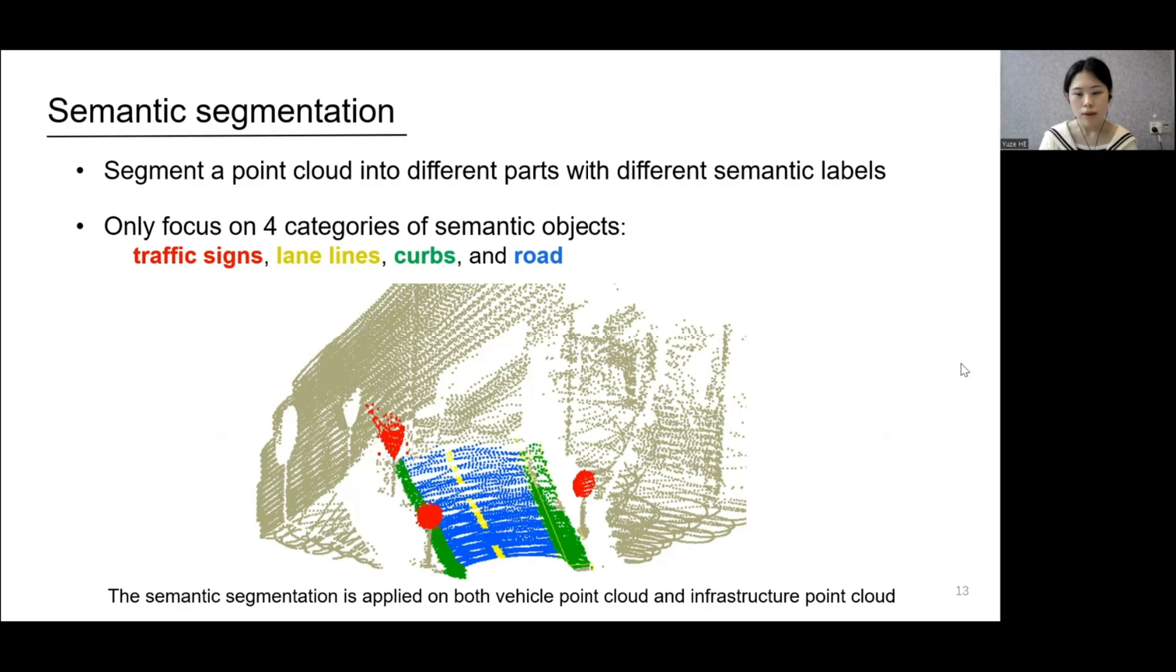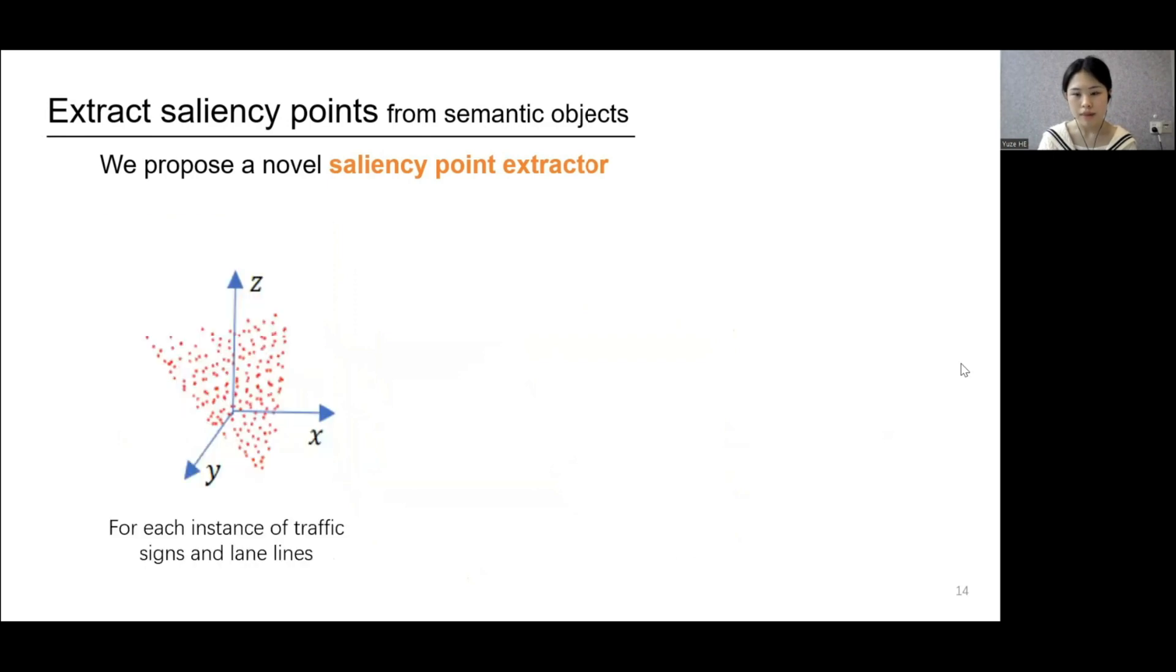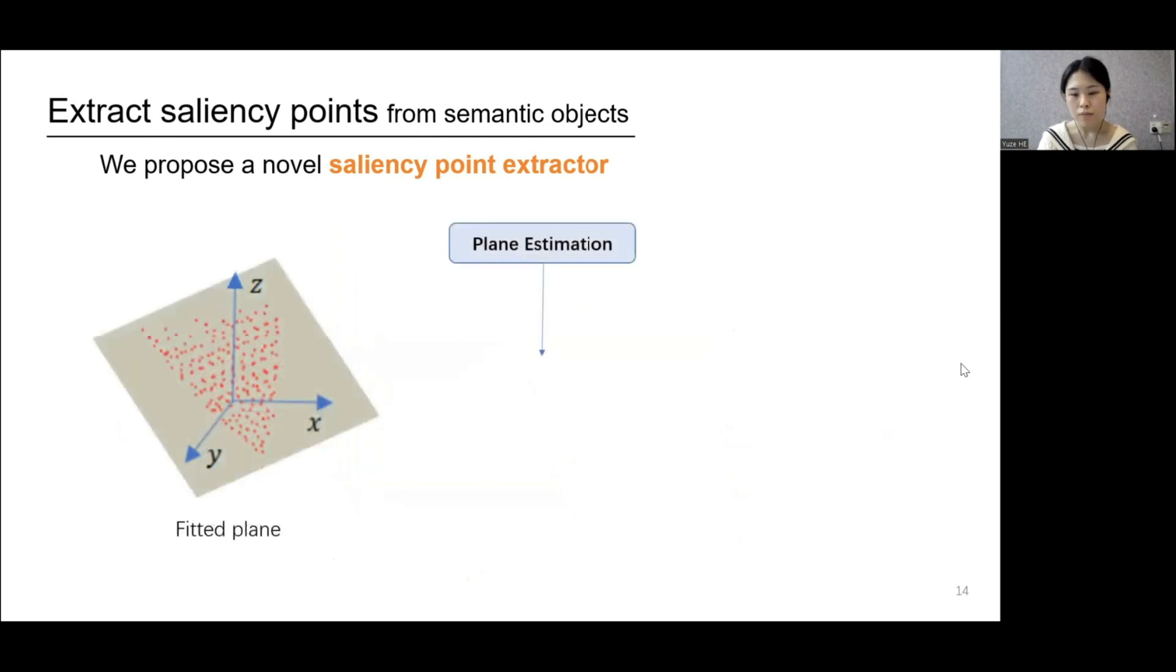Then, instances with regular shapes such as traffic signs and lane lines are used to extract saliency points. We then propose a novel algorithm to extract saliency points of each semantic instance. The pipeline is as follows. We first estimate the plane of the semantic object and filter points that do not belong to the object.